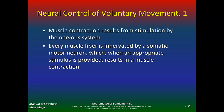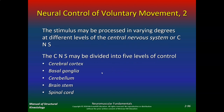If you have damage to these motor neurons, then obviously you cannot have a muscle contraction. The stimulus may be processed in varying degrees at different levels of the central nervous system, or CNS. The CNS may be divided into five levels of control: the cerebral cortex, which is the highest level of control; then basal ganglia; cerebellum; brainstem; and spinal cord, which is the lowest level. An injury to the spinal cord wouldn't be as damaging as damage to the cerebral cortex.